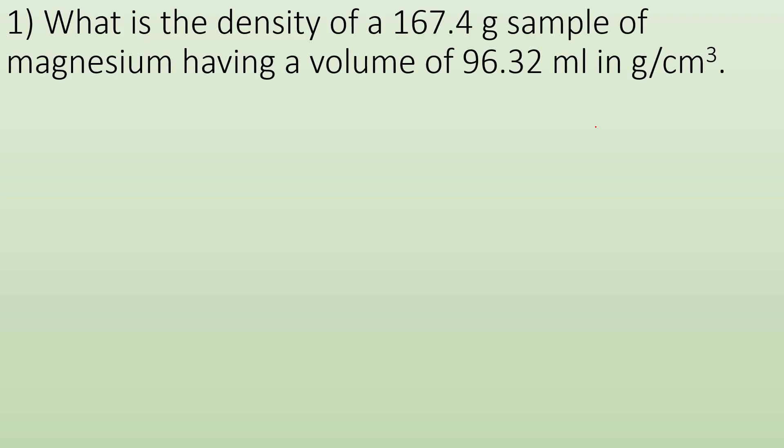So first problem, what is the density of a 167.4 gram sample of magnesium having a volume of 96.32 milliliters in terms of grams per cubic centimeter? First things first, it helps to know that one milliliter is defined as one cubic centimeter. They're kind of used interchangeably.